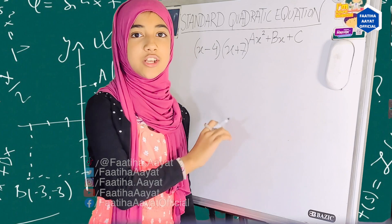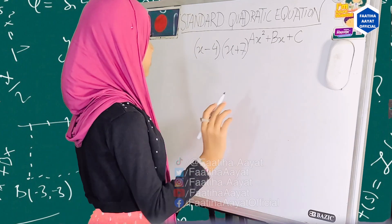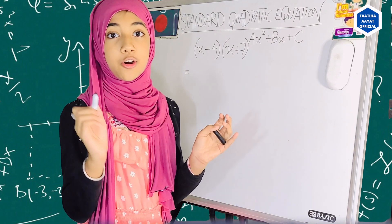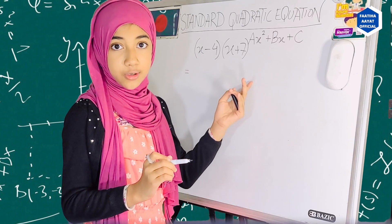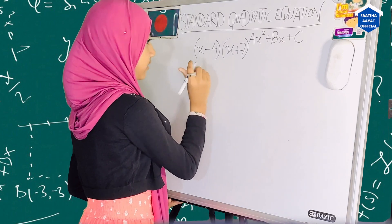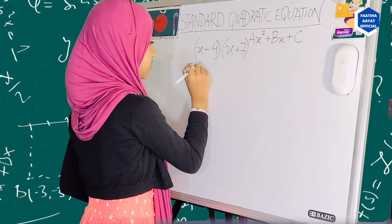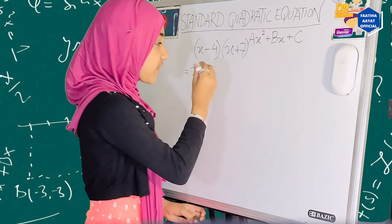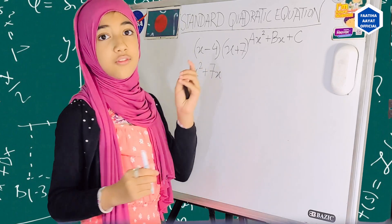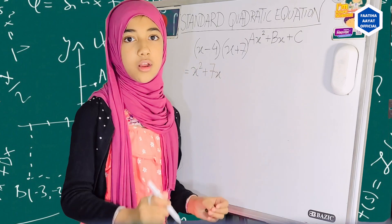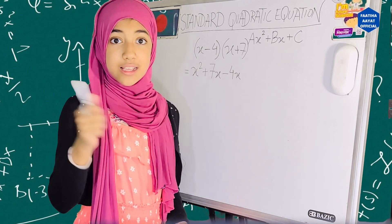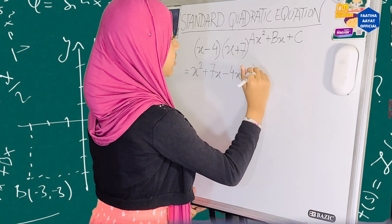Now, let's figure out how to write this equation in the standard quadratic form. First, what we will do is the distributive property. Basically, that means you have to multiply each number or variable inside one parenthesis with the other numbers in the other parenthesis. So we're going to start with x. x times x is basically x squared. Then, x times 7 is plus 7x. Then, since we're done with the first term, now we will go to minus 4. Minus 4 times x is minus 4x, and minus 4 times plus 7 is minus 28.